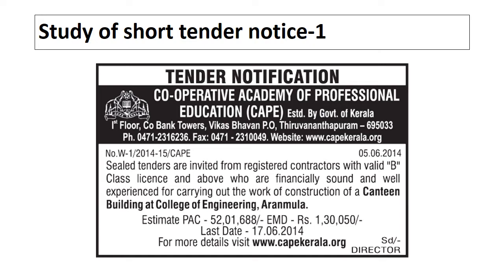This tender notice is for the work of construction of a canteen building at College of Engineering, and the minimum license required to bid on this tender is B class and above. Below B class license you cannot bid on this tender. The estimated value of the canteen building is approximately 52 lakhs, and the EMD given by the contractor to the authority before commencement of work is approximately 1,30,000 rupees. For more details of this tender, visit the website given below to find the detailed tender for the construction of canteen building at College of Engineering.